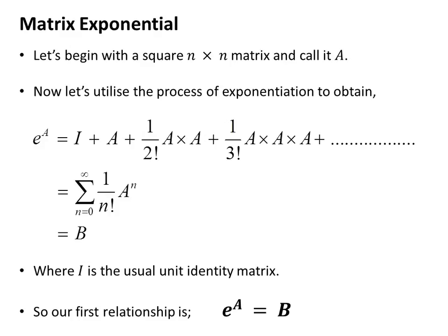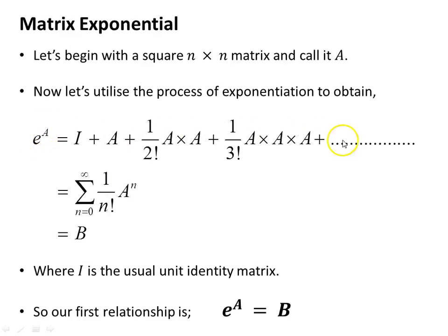We start with a square n by n matrix A, whatever size — 2 by 2, 3 by 3, whatever you want. We want to exponentiate the matrix as shown. This looks like the Taylor series expansion because it is, just as e to the power of x equals 1 plus x plus x squared over 2 factorial plus x cubed over 3 factorial and so on. The Taylor expansion of e to the power of A, where A is a square n by n matrix, produces another matrix. This general expression for the summation of the expansion will be some new matrix B, where I is the identity matrix. Our first relationship: e to the A equals B.